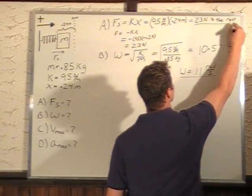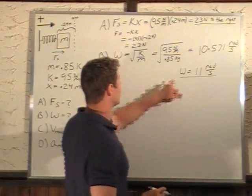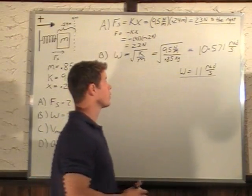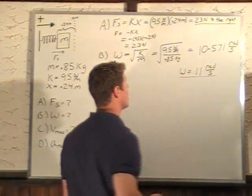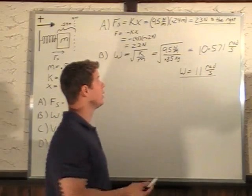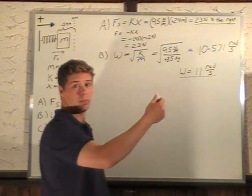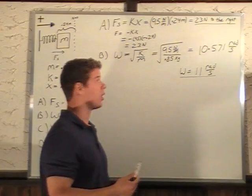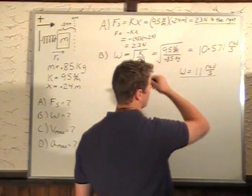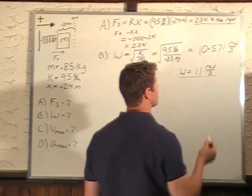Now, the units work out, because a newton is a kilogram meter per second squared. So a kilogram cancels this kilogram, left with meter per second squared. Meter cancels with this meter, so we're just left with second squared on the bottom, take the square root in seconds. And since it's an omega calculation, it's radians per second.